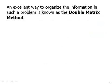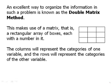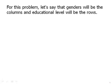An excellent way to organize the information in such a problem is known as the double matrix method. This makes use of a matrix that is a rectangular array of boxes, each with a number in it. The columns will represent the categories of one variable and the rows will represent the categories of the other variable. For this problem, let's say that gender will be the columns and education level will be the rows.